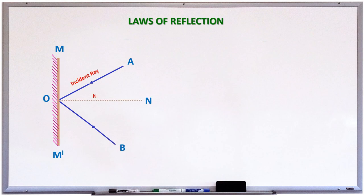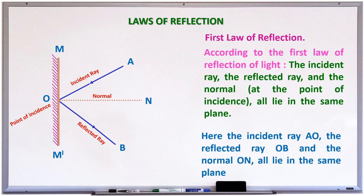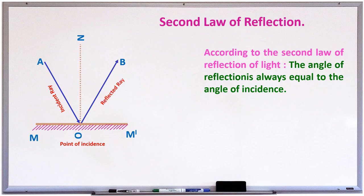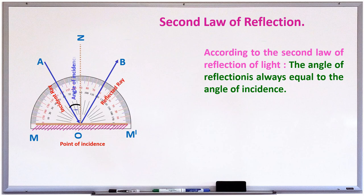The first law of reflection says: the incident ray, reflected ray, and the normal all lie in the same plane. Look here children — ray AO, ray OB, and normal ON all lie in the same plane. This is the first law of reflection. The second law of reflection says: the angle of reflection is always equal to the angle of incidence. That is, angle I is equal to angle R. These two are the laws of reflection.